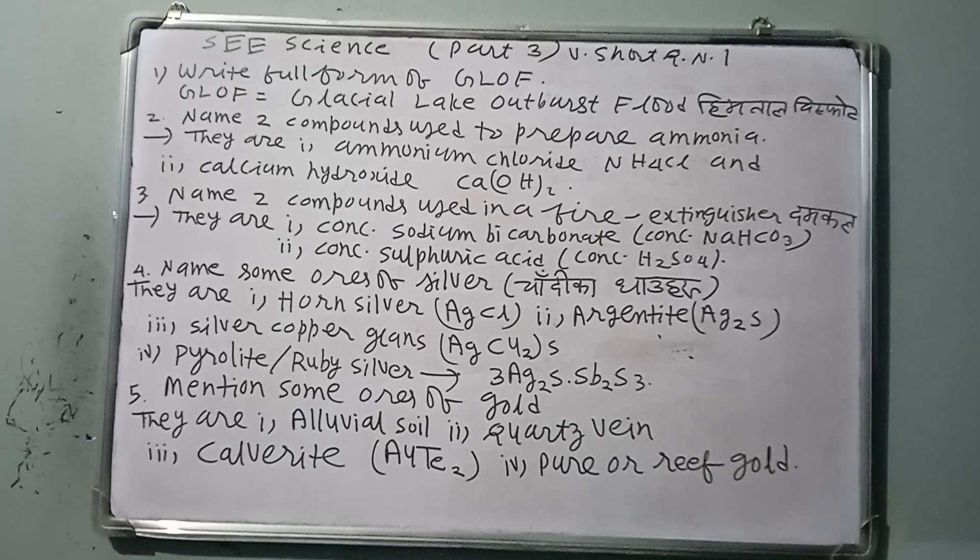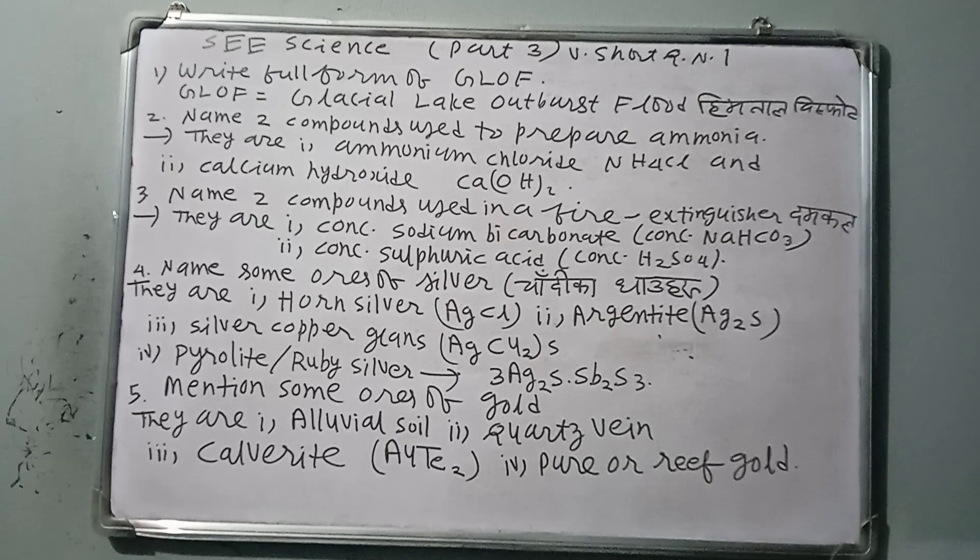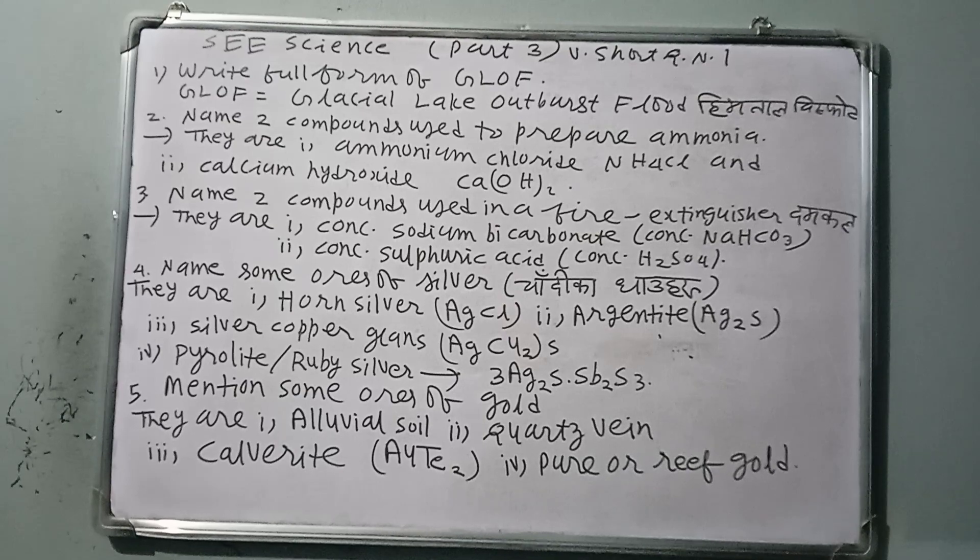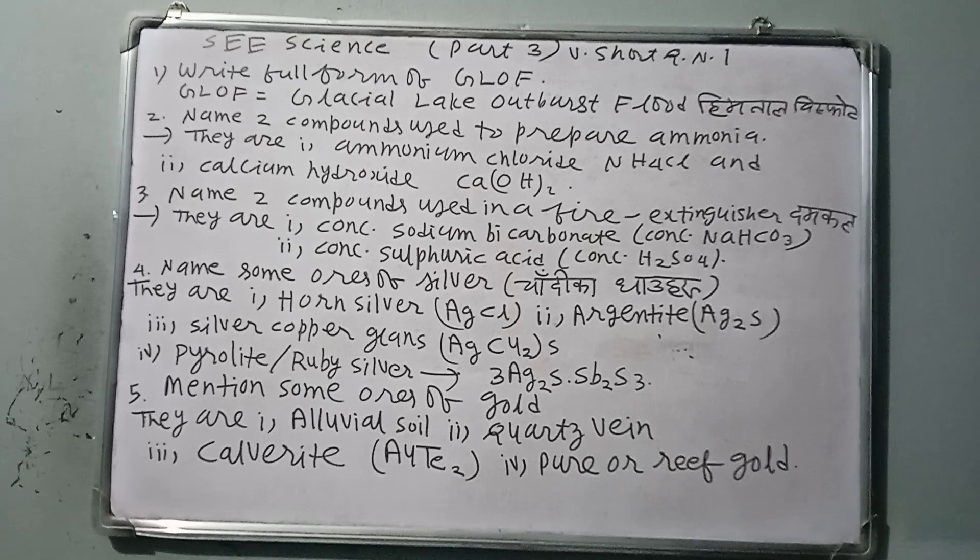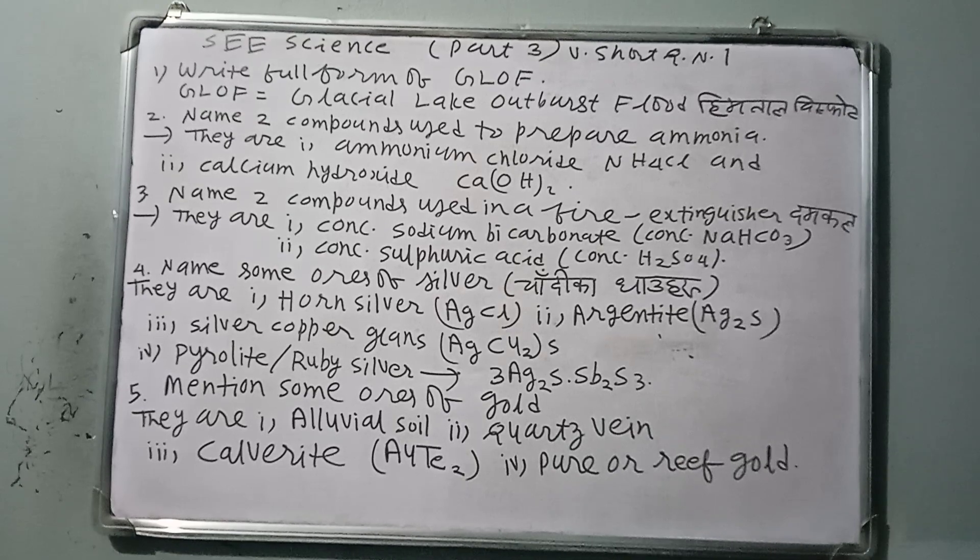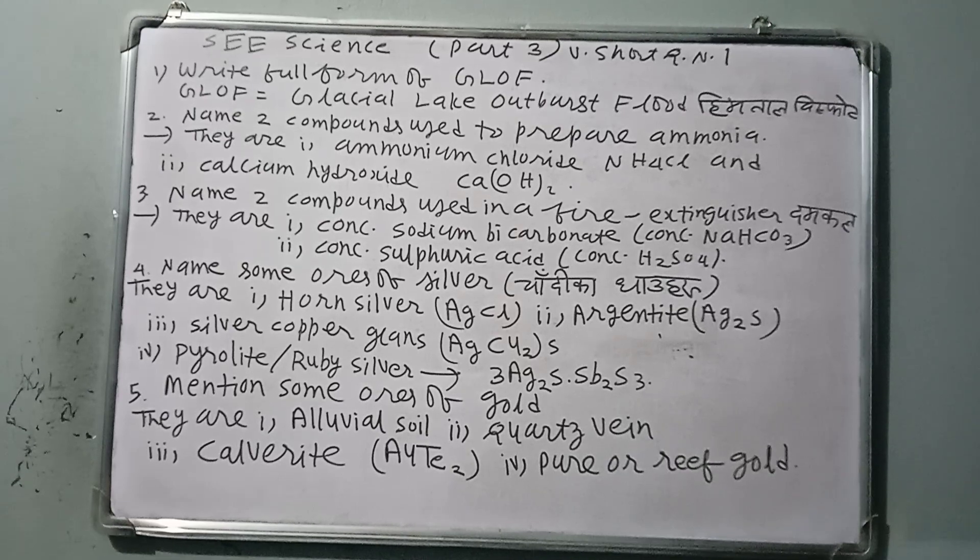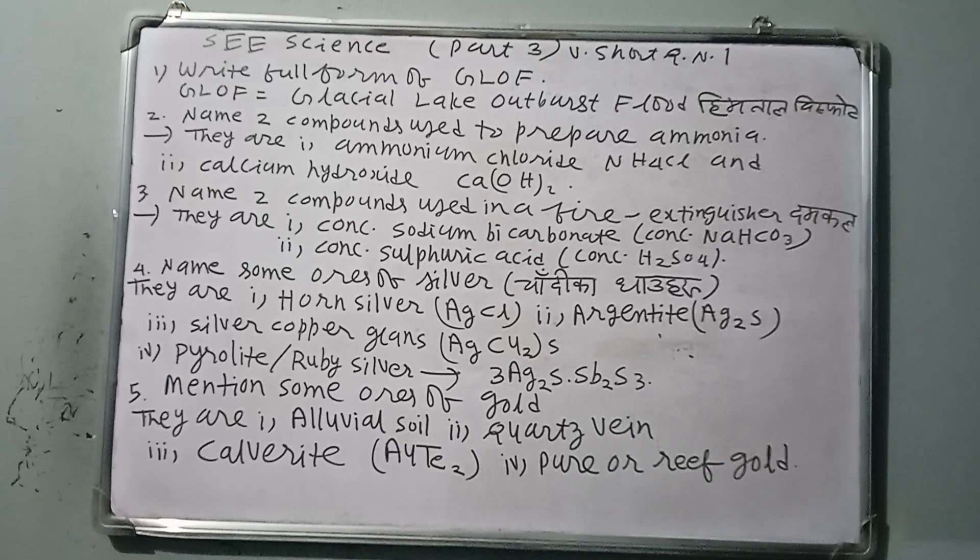Question number three: Name two compounds used in a fire extinguisher. Answer: The two compounds used in a fire extinguisher are as follows. Number one, concentrated sodium bicarbonate, formula NaHCO3. Number two, concentrated sulfuric acid, formula H2SO4.